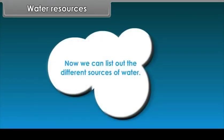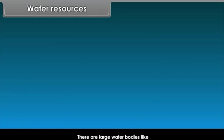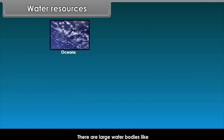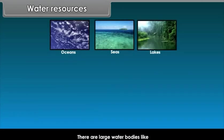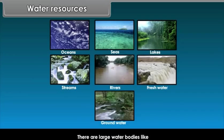Now, we can list out the different sources of water. There are large water bodies like oceans, seas, lakes, streams, rivers, freshwater, groundwater, etc. These are the different sources of water on Earth.